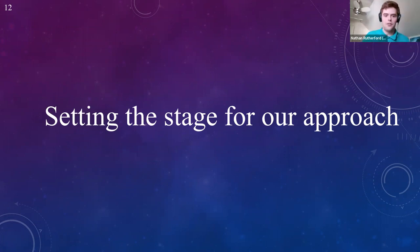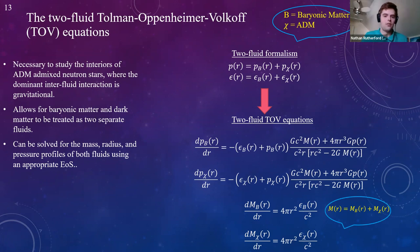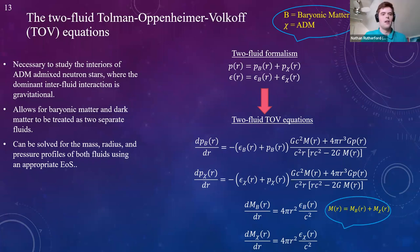Typically, neutron stars are modeled using a single fluid — the baryonic matter equation of state — and one solves the Tolman-Oppenheimer-Volkoff (TOV) equations for pressure, mass, and radius given some central density. However, to study dark matter admixed neutron stars, we need the two-fluid TOV equations, necessary to study admixed neutron stars where the dominant inter-fluid interaction is gravitational.